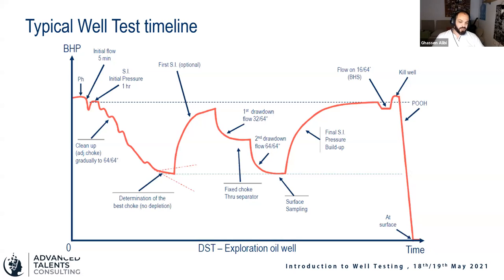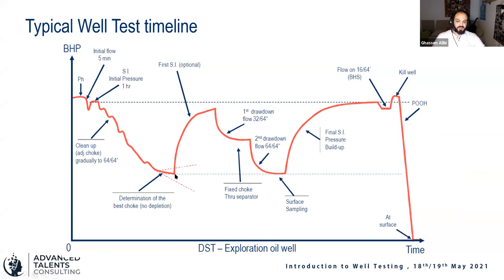We can confirm clean fluids by measuring fluid properties — for example, the salinity of produced water and checking the specific gravities of gas and oil. Once we know we're producing 100% clean fluids from the reservoir, we determine the best choke with no depletion. Right after that we do the first buildup: we close the well at the choke manifold and measure the pressure, which gives us information about how good the reservoir is and how fast it recovers from the drawdown.